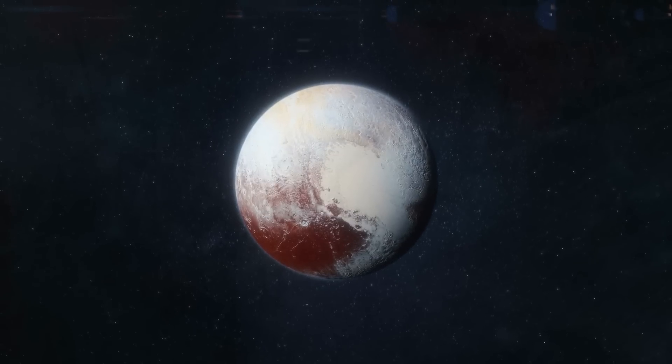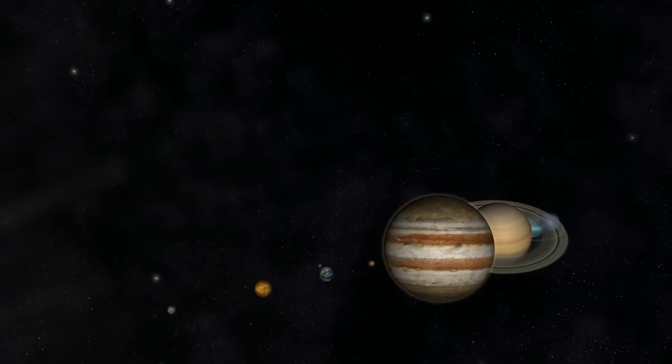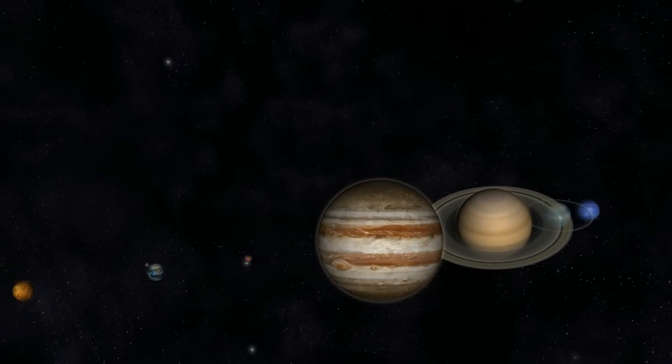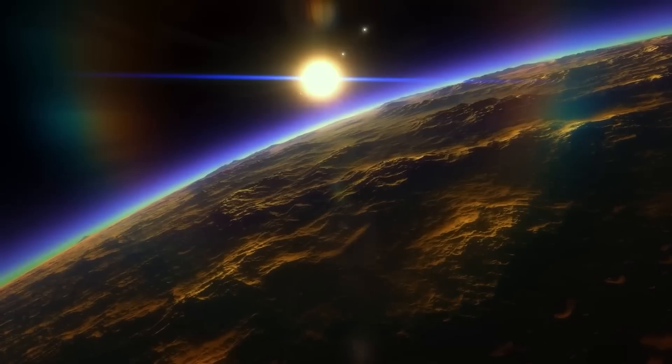Once Pluto was the ninth planet of the solar system, but after its demotion to a dwarf planet, we officially have only eight major planets left in the system. At the outermost edge of the solar system, another planet must be.